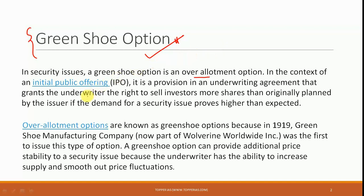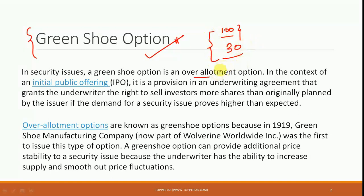In simple words, suppose I want to issue an initial public offering and I have 100 shares that I want to sell, but demand is generated for more shares. I can go to SEBI and ask for permission to issue an over-allotment. If I get that permission, I will be able to issue some more shares — say maybe 30 more shares in addition to the original hundred. This is what is known as a green shoe option.